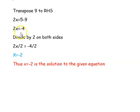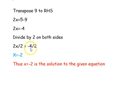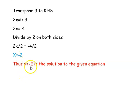We are dividing by 2 on both sides to get the variable x. So, 2x divided by 2 equal to minus 4 divided by 2. x is equal to minus 2. Thus, x equal to minus 2 is the solution to the given equation.